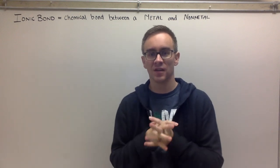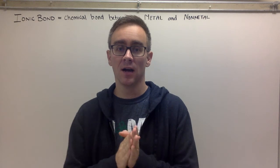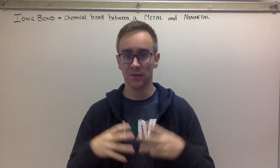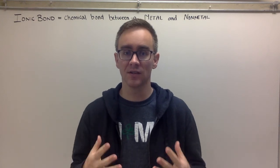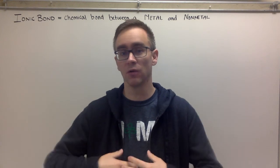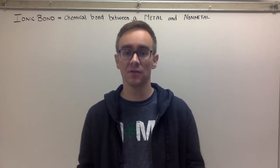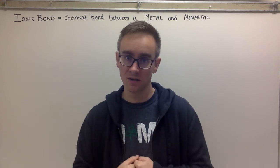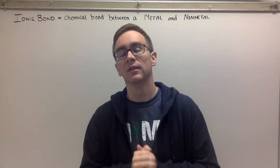Hey there ladies and gentlemen, boys and girls. Today we are going to be talking about the first type of chemical bonding known as ionic bonding. Now that we've finished talking about ions, talking about how some atoms are looking to lose their electrons, we're going to talk about where those electrons go in the case for a metal, and for non-metals — those who want to gain electrons — where are those electrons coming from to be able to make both of them happy.